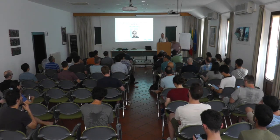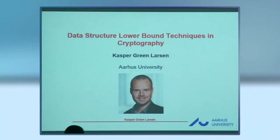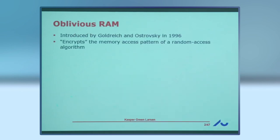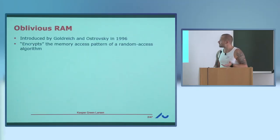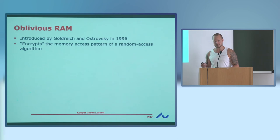Thanks for the introduction. This will be a survey of recent work on using data structure lower bound techniques and applying them to problems in cryptography. Let me start with where it all started: oblivious RAMs. An oblivious RAM is basically a method for encrypting the memory access pattern of an algorithm.